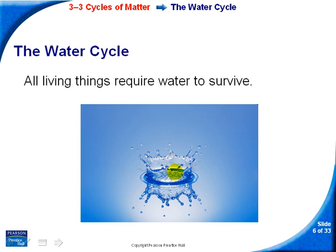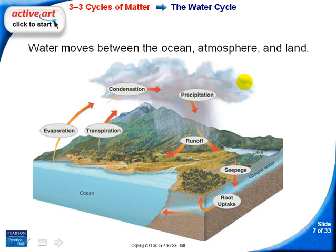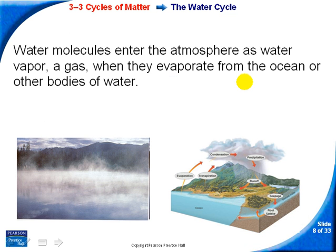The first cycle we'll talk about is water, and this one is ultra important because all things need water to survive. Here's the cycle — you may want to come back to this picture to look at it more closely. It shows almost all the different ways that water moves between ocean, atmosphere, and land.